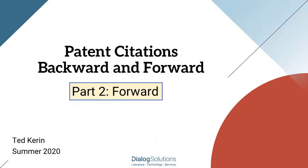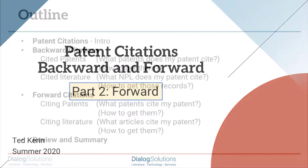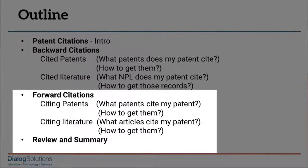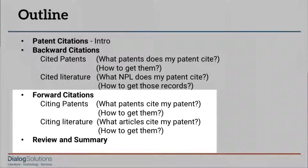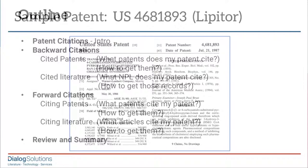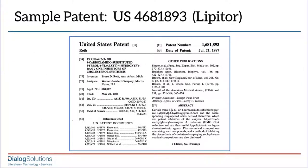Hello everyone. This video is part two of Patent Citations Backward and Forward. In this video, we'll talk about forward citations — how to start with a particular patent and find any later patents or articles that cite to it. As in Part 1 on backward citations, we'll use as our starting point this 1987 patent, US 4681893. It's the basic patent for a drug best known as Lipitor.